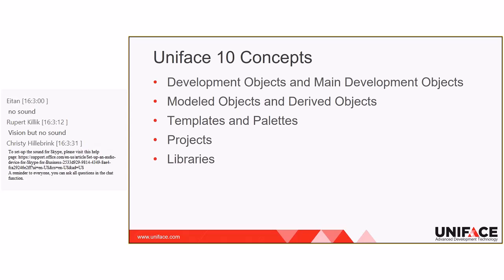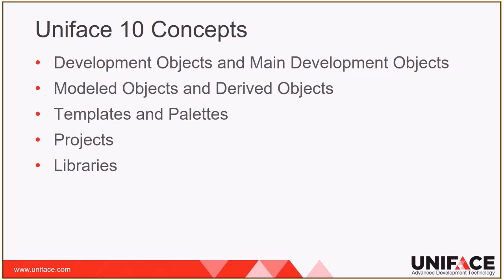Each main development object has an associated editor used to edit both the main object and its subobjects. Another concept: modeled objects and derived objects. Modeled objects are development objects that can be inherited by other development objects, which are typically created using the modeled objects. Derived objects inherit from modeled objects. Thus, a component entity created using a modeled entity is a derived entity. In previous versions of Uniface, only objects belonging to the application model were occasionally referred to as modeled objects. In Uniface 10, the term has been expanded and made more consistent. Modeled objects now consist of: first, modeled entities and fields; second, modeled properties; and third, modeled components.